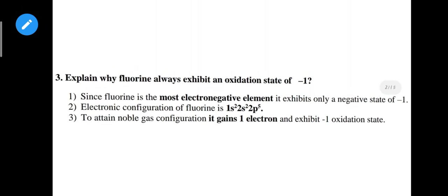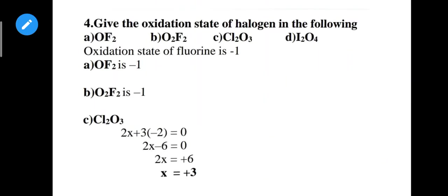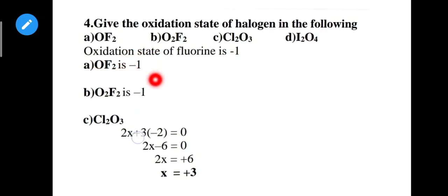Fluorine is the most electronegative element. Based on its electronic configuration, it gains 1 electron and exhibits a minus 1 oxidation state. So the oxidation state of fluorine is always minus 1 directly, because fluorine is the most electronegative.